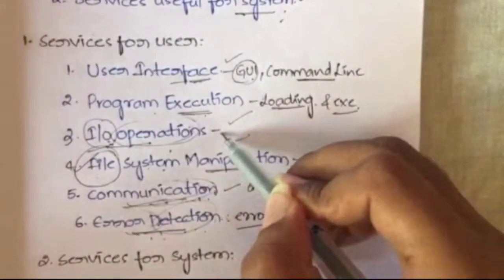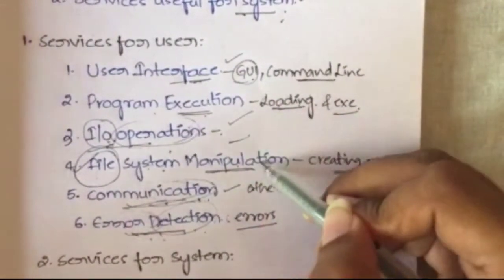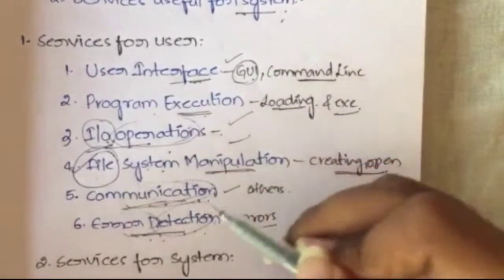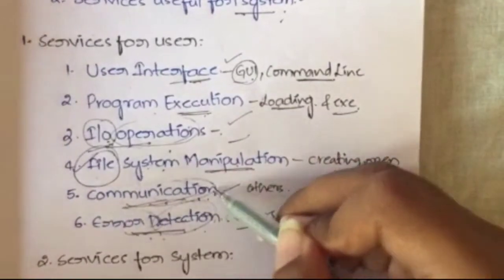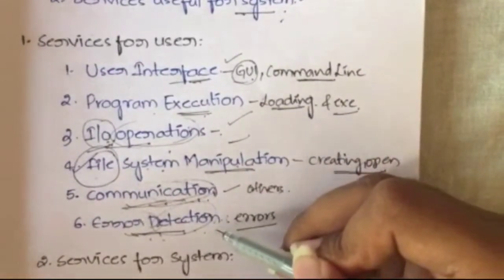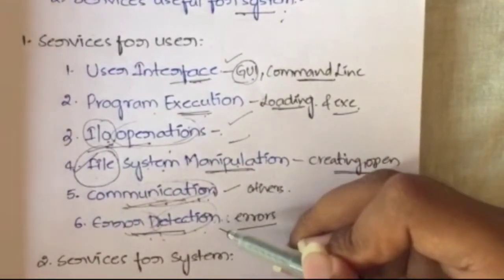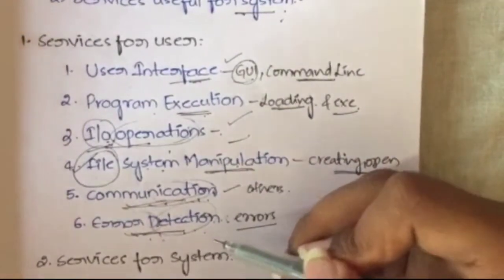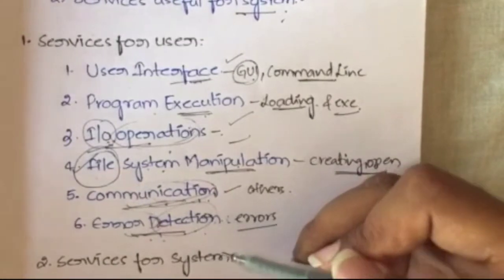So those are the six services that are useful for the user: user interface, program execution, IO operations, file system manipulation, communication, and error detection.